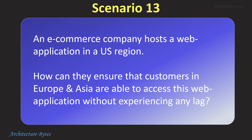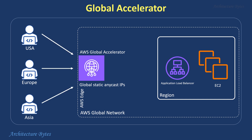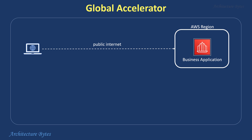An e-commerce company hosts a web application in a US region. How can they ensure that customers in Europe and Asia access it without experiencing lag? Here we could use AWS Global Accelerator, which comes with static anycast IP addresses. You configure your DNS service to point to these IP addresses, and the Global Accelerator routes user traffic over the fast AWS network to your application endpoint. It is ideal for geographically distributed audiences. Normally, when a user accesses an application on AWS, it goes over the public internet until it reaches the destination regional endpoint, which can be slow depending on network hops and available bandwidth.